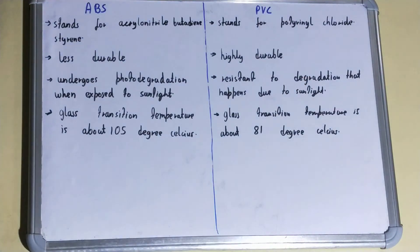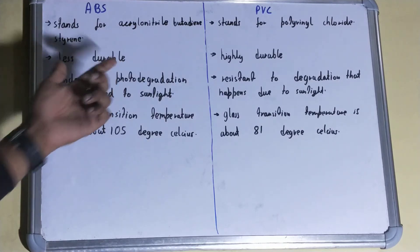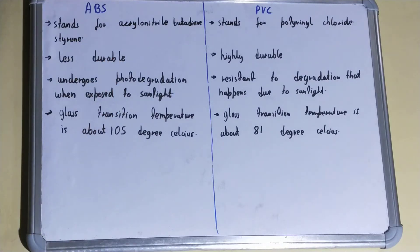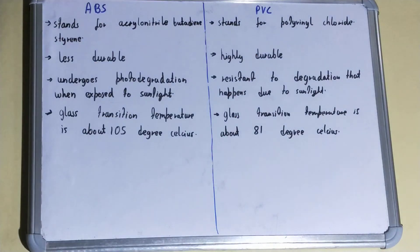If we talk about durability — that is bearing of temperature, bearing of change, bearing of pressure — ABS is less durable and can't bear too much pressure, temperature, or other changes. But PVC is highly durable.